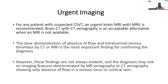When urgent imaging is required for any patient with suspected CSVT, an urgent brain MRI with MR venogram is recommended. Brain CT with CT venography is an acceptable alternative when MRI is not available. The clear demonstration of absence of flow and intraluminal venous thrombi by CT or MRI is the most important finding for confirming the diagnosis. However, these findings are not always evident and the diagnosis may rest on MR venography or CT venography showing only absence of flow in a venous sinus or cortical vein.